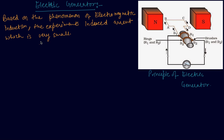In an electric generator, mechanical energy is used to rotate a conductor in a magnetic field to produce electricity. Let me tell you how an electric generator works.